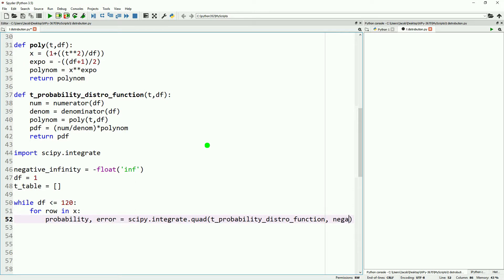Going into the integral, we want our t probability distribution function with lower bound negative infinity and upper bound as the x value, passing through our degrees of freedom. We'll append to our t_table the degrees of freedom, our t value, and our probability value rounded to five decimal places. Lastly, we'll increment degrees of freedom by one.